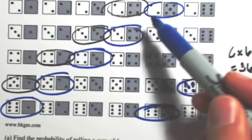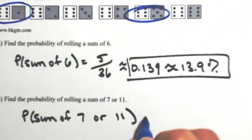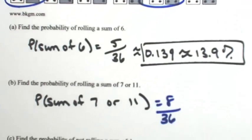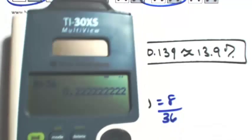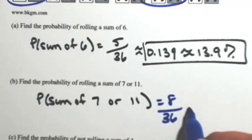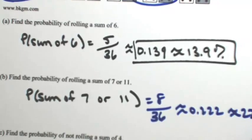So all together is one, two, three, four, five, six, seven, eight ways. Again, out of the 36. So eight divided by 36, we have 0.2 repeating. So this is about 0.222, which is about 22.2%.